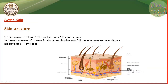Then we have the dermis layer. As we can see, it contains glands such as the sweat gland and the sebaceous gland, also called the oily gland. There is also the hair follicle — the sebaceous gland is attached to the hair pocket, as we can see. This is the hair, the sebaceous or oily gland, and the hair follicle.